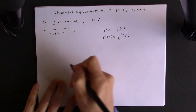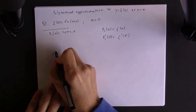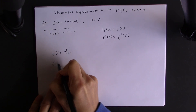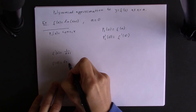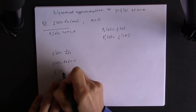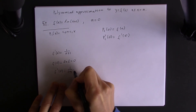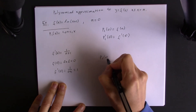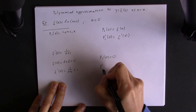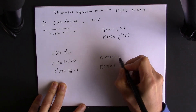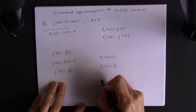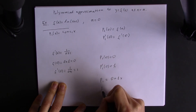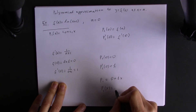Doing the calculations: since our function is the natural log, the derivative of ln(x+1) is 1 over (x+1). We calculate f(0) equals ln(1) which is 0, and f'(0) equals 1 over (0+1) equals 1. Therefore p1(0) equals 0 and p1'(0) equals 1, so the y-intercept is 0 and the slope is 1. We get p1(x) equals x.